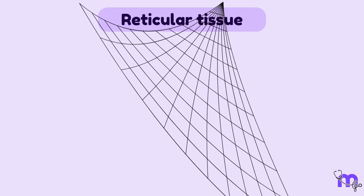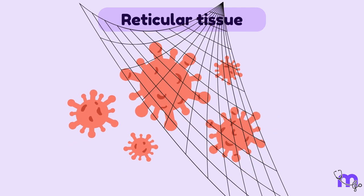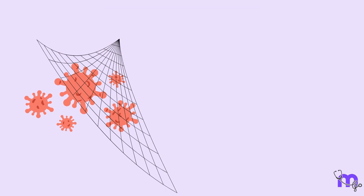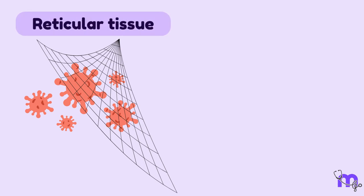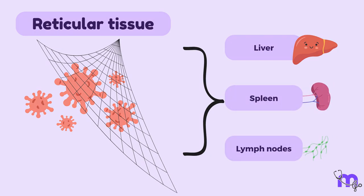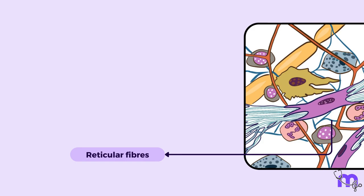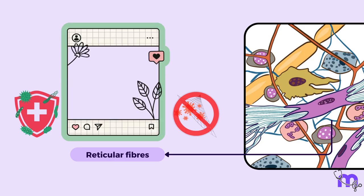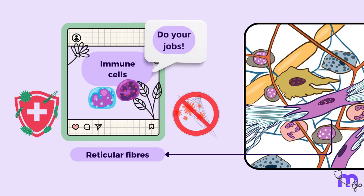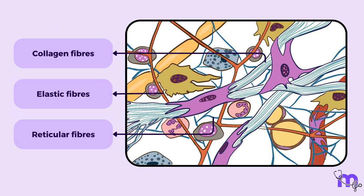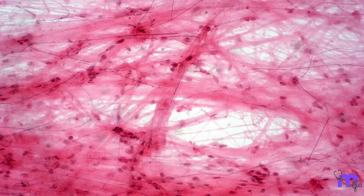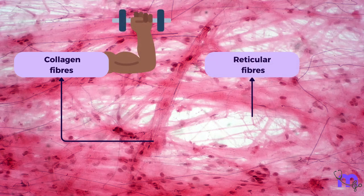Reticular fibers help trap and filter out harmful substances floating around in the body's fluids. They are found in a special type of connective tissue called reticular tissue, present in organs like the liver, spleen, and lymph nodes. Reticular fibers are also actively involved in supporting the immune system, providing a framework for immune cells to move around and do their jobs. Interestingly, reticular fibers are made up of a protein called reticulin, which is similar to collagen but more delicate and flexible.